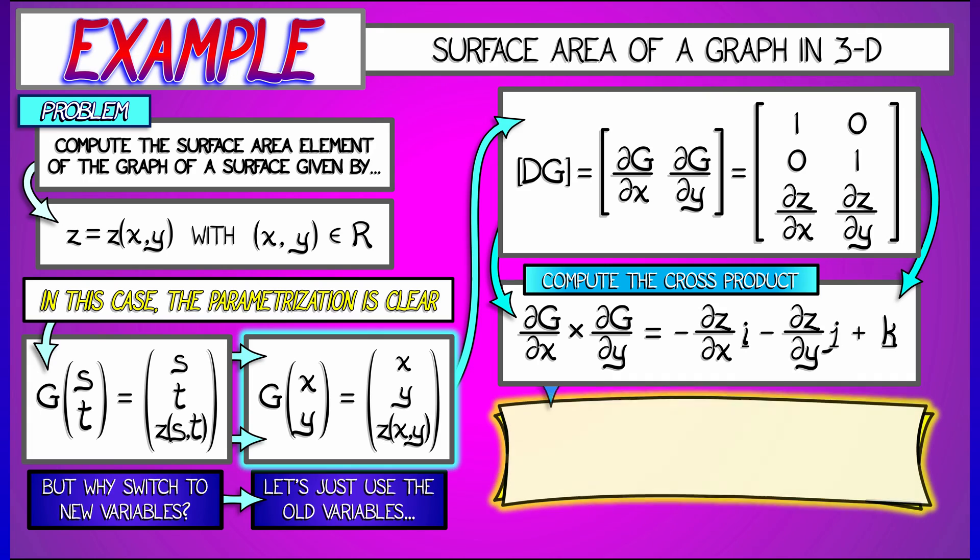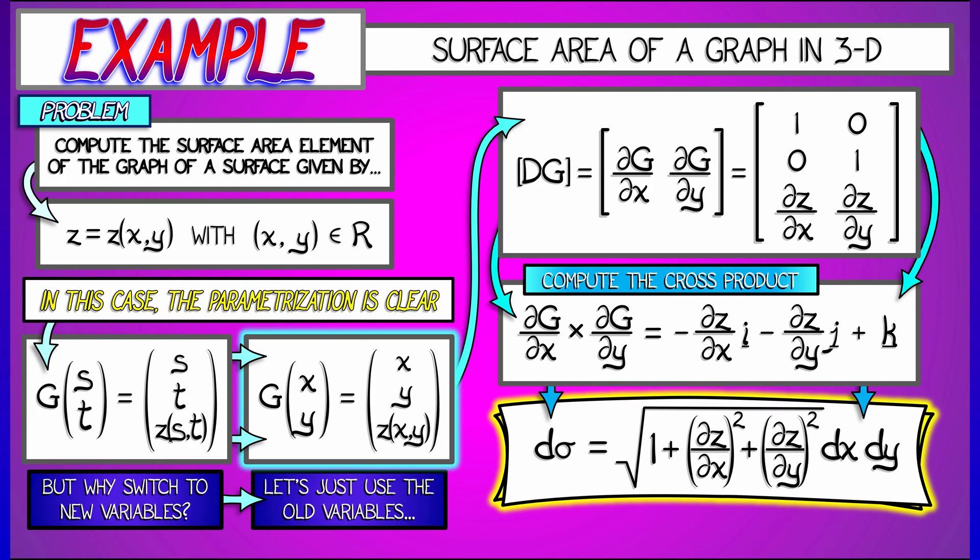To get the surface area element d sigma, we take the square root of the sums of squares of these components. That's 1 plus partial z partial x squared plus partial z partial y squared, all of that times the area element dx dy. That's our surface area element.